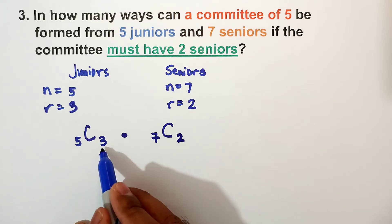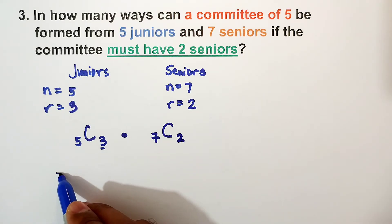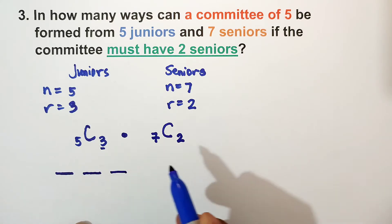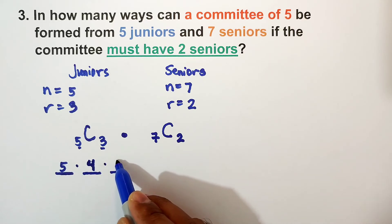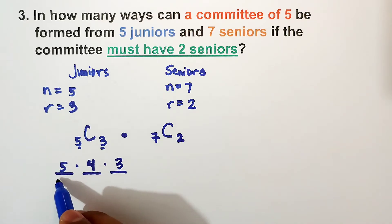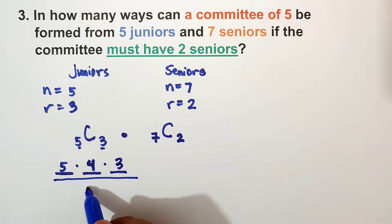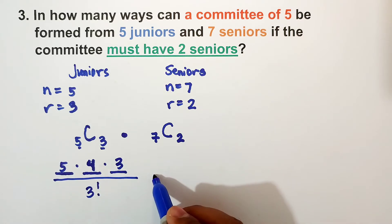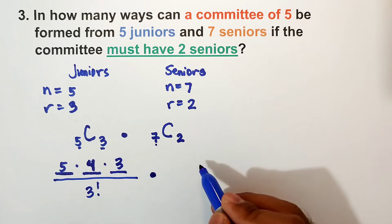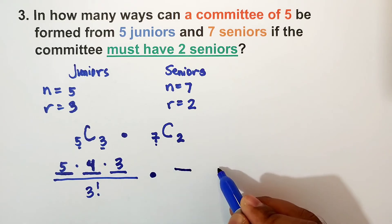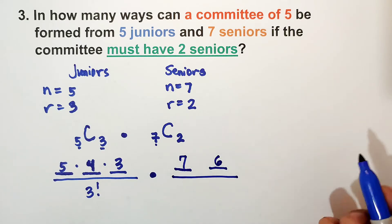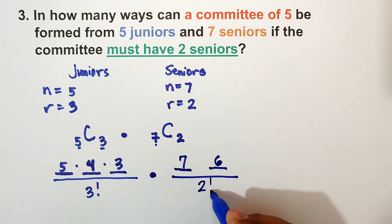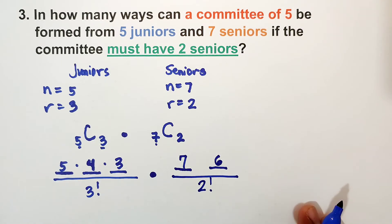For combination of five taken three, we have three lines. Start from five, times four, times three — minus one each time — then divide by R factorial, which is three factorial. Times combination of seven taken two: two lines, start from seven, then six, divided by two factorial.